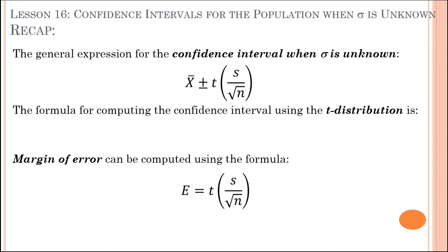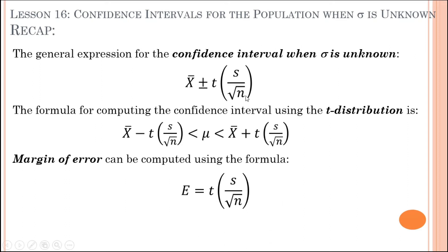Let's recap what we have just learned. The general expression for the confidence interval when the population standard deviation is unknown uses the t-value from the t-table, s as the sample standard deviation, and n as the total number of samples. This formula for the confidence interval using the t-distribution is only applicable when the population standard deviation is unknown. The part with t multiplied by (s over square root of n) is the margin of error.